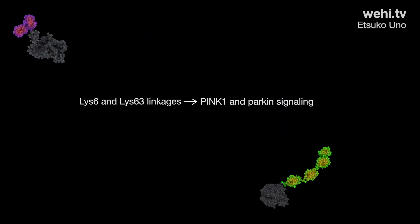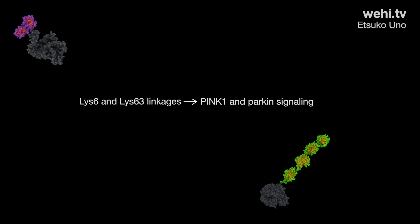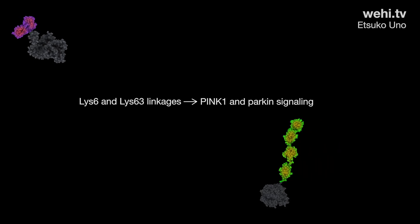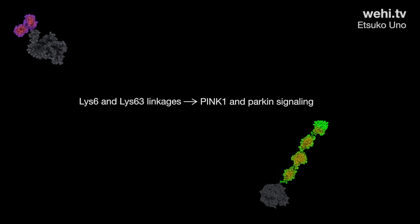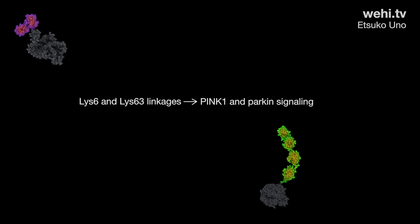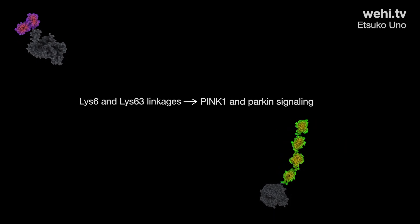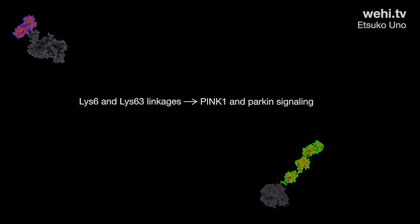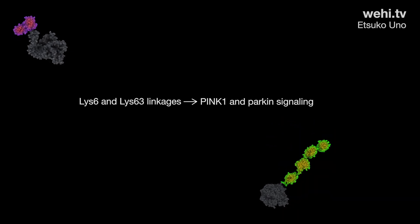Methionine 1 linkages are involved in immune signalling. Lysine 6 and 63-linked ubiquitin chains are involved in signalling by PINK1 and Parkin. Both these proteins have been implicated in the development of Parkinson's disease, a destructive neurological condition of the brain.